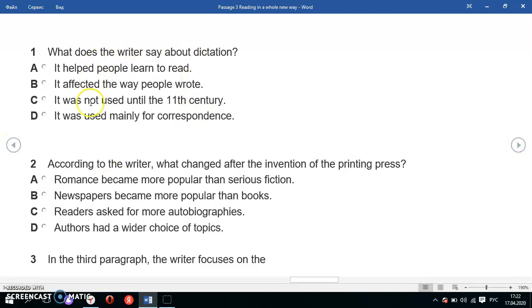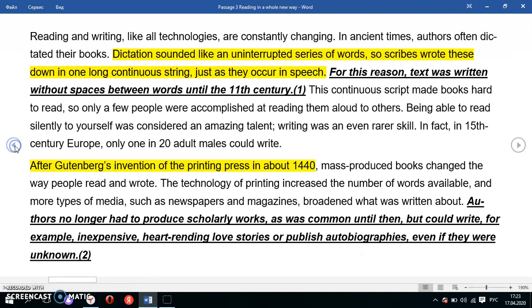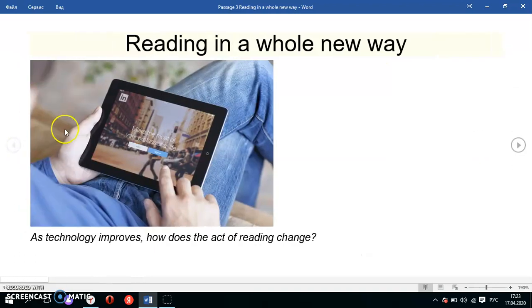First we have multiple choice questions. Question one: What does the writer say about dictation? Keywords here are 'dictation' and 'the writer's say.' We need to find the word dictation from the passage. We don't need to read the whole text, only the relevant part.